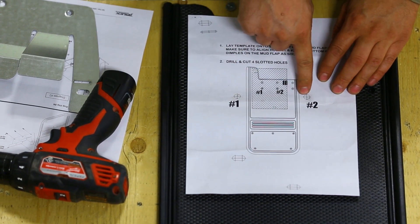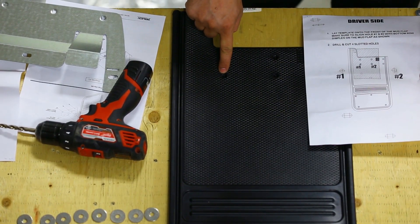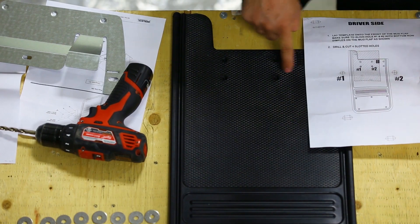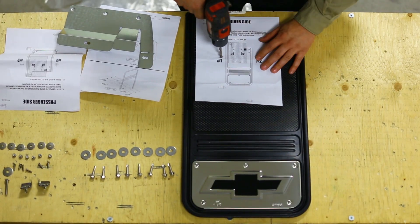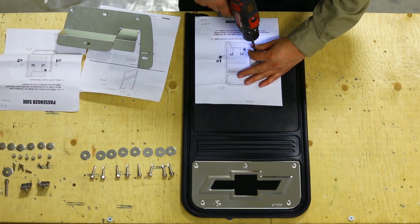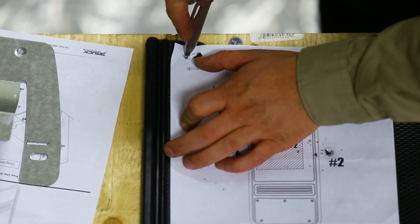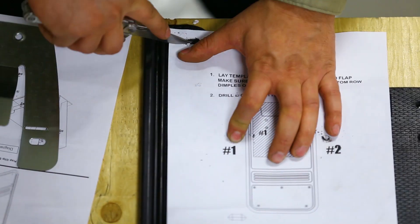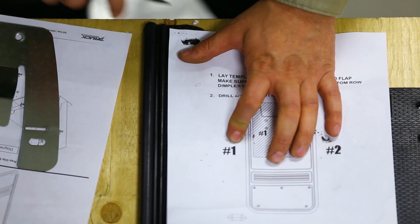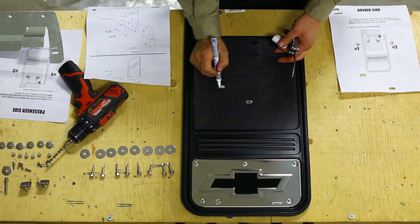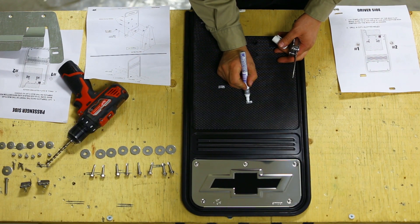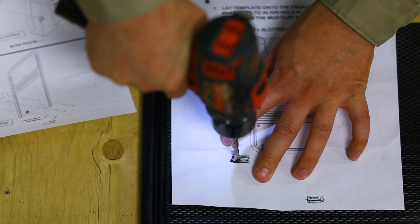Cut out the two center holes in the template and align them to the corresponding holes on the flap. With a knife or other cutting tool, cut out the remaining holes. If you'd like, you can use a paint pen to mark the holes onto the mud flap, or continue to use the paper template.